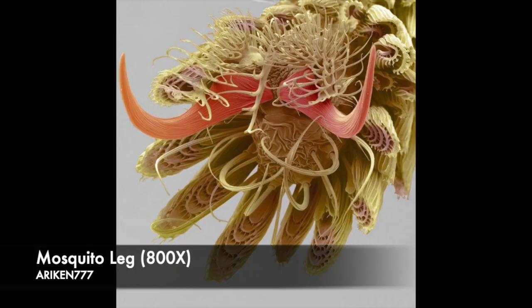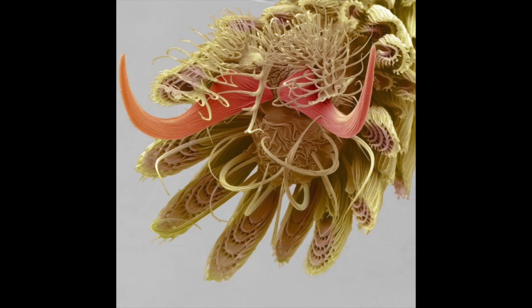Mosquitoes have small hooks along their legs that allow them to latch onto skin and hairy pads that allow them to adhere to walls. Up close, it's not so surprising that these features look like the teeth and tongues of some kind of demon hydra.